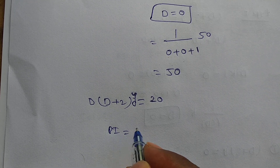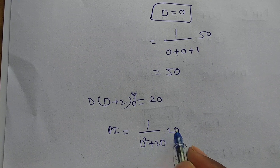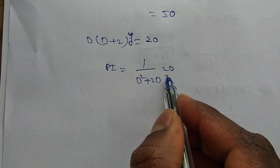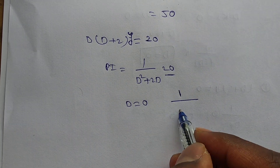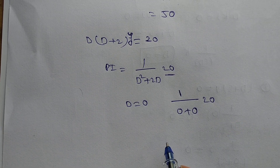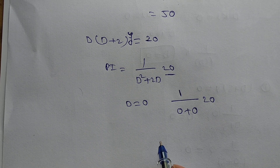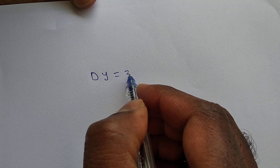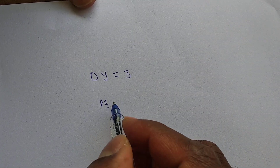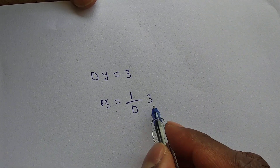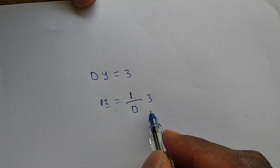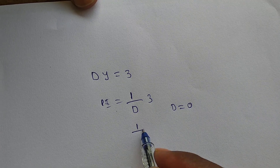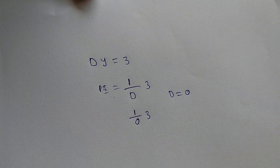PI = 1/(D²+2D) · 20. Since q(x) = 20 is constant, put D = 0: we get denominator = 0. When the denominator is 0, remember that 1/D is called the integral operator. So 1/D separately means just integration. Therefore 1/D · 3 = integral of 3 dx = 3x.